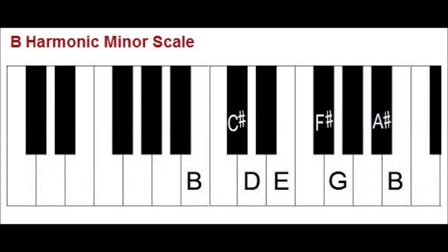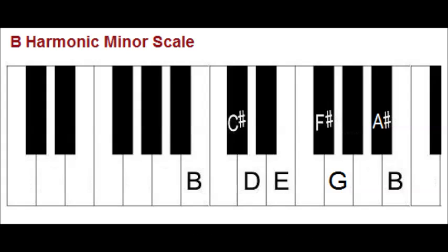Primary chords in a minor key are based on the first, fourth, and fifth notes of the minor scale. For minor keys, the scale used when forming primary chords is the harmonic minor scale. The notes of the B harmonic minor scale are as follows.